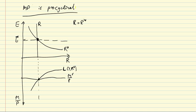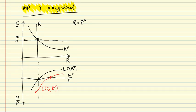The problem is that monetary policy is pro-cyclical. What do we mean by that? Let's suppose that the business cycle takes off and we have an expansion. How do we show that in this diagram? Well, the money demand curve shifts out as income increases, and that increases the demand for cash to conduct transactions.